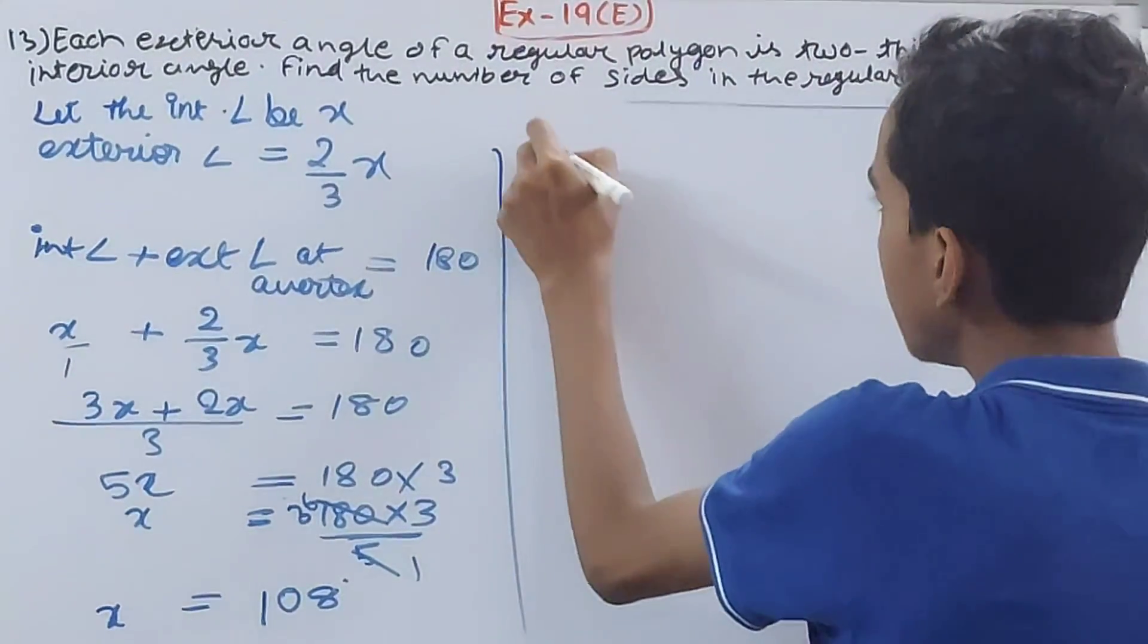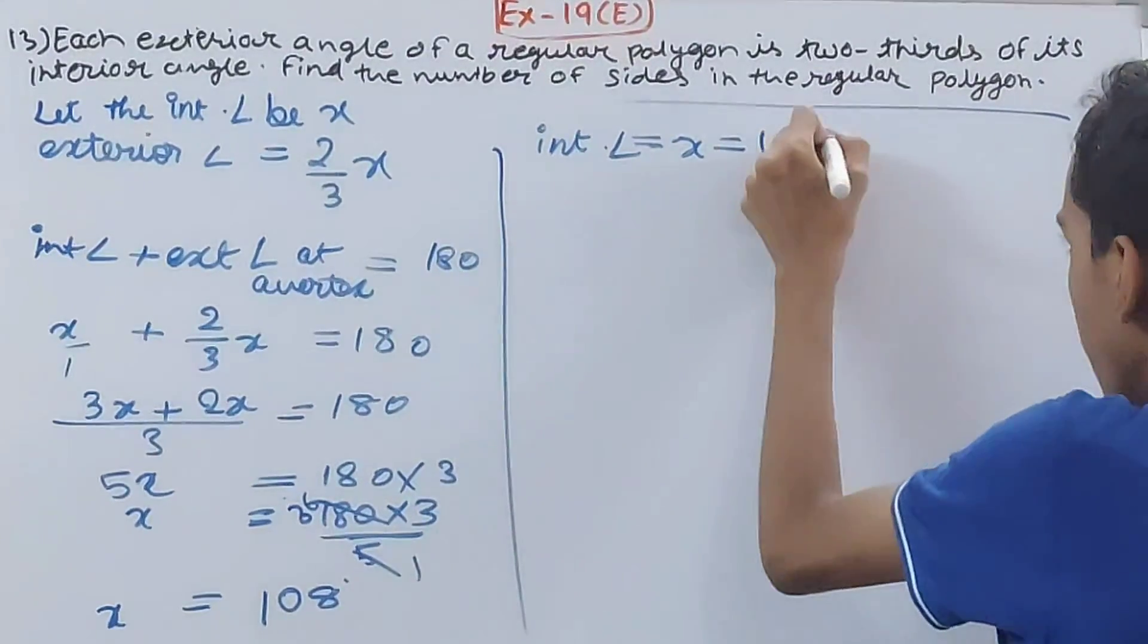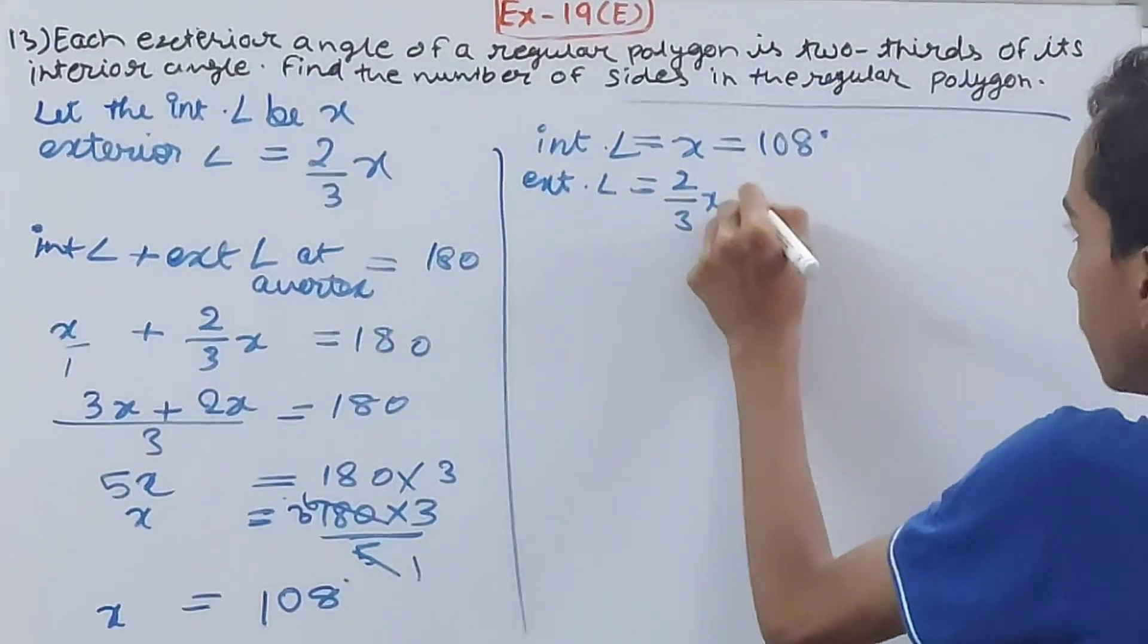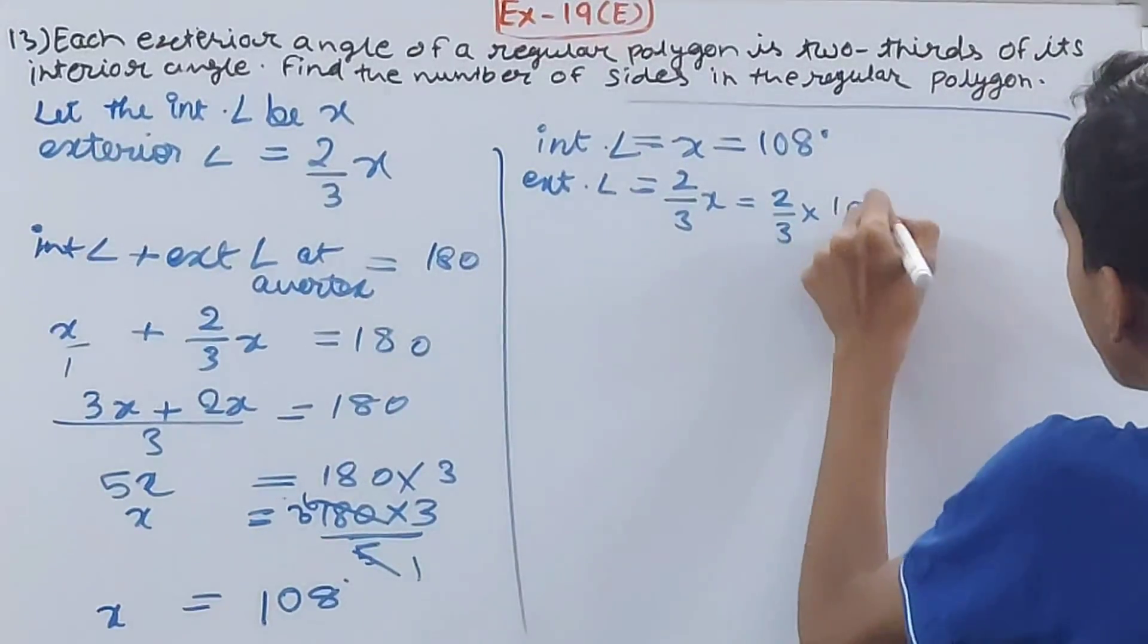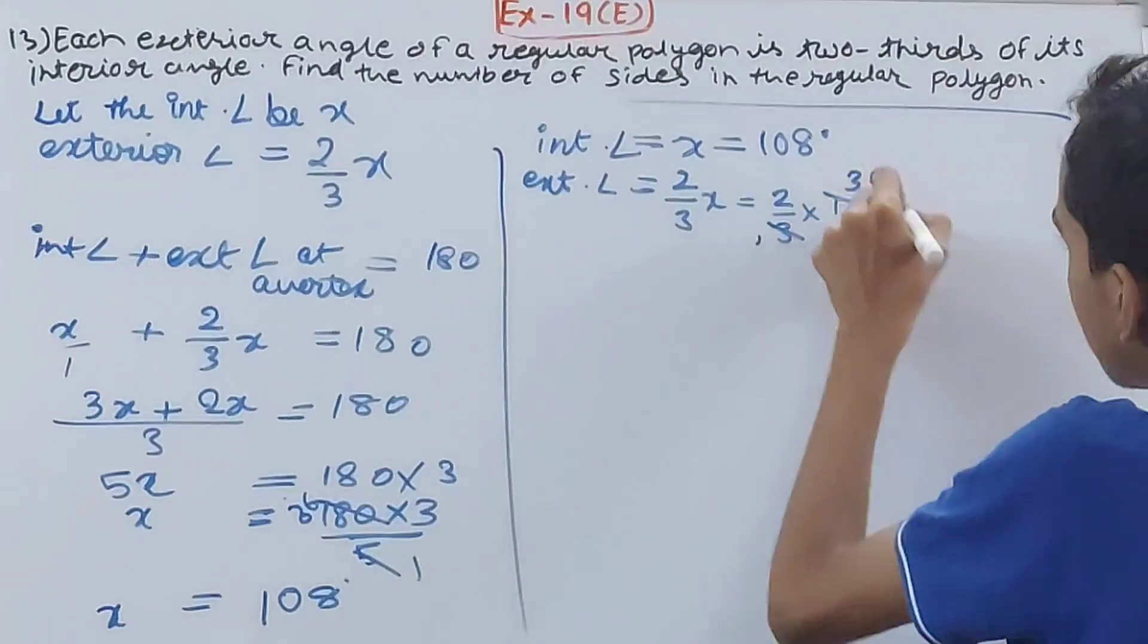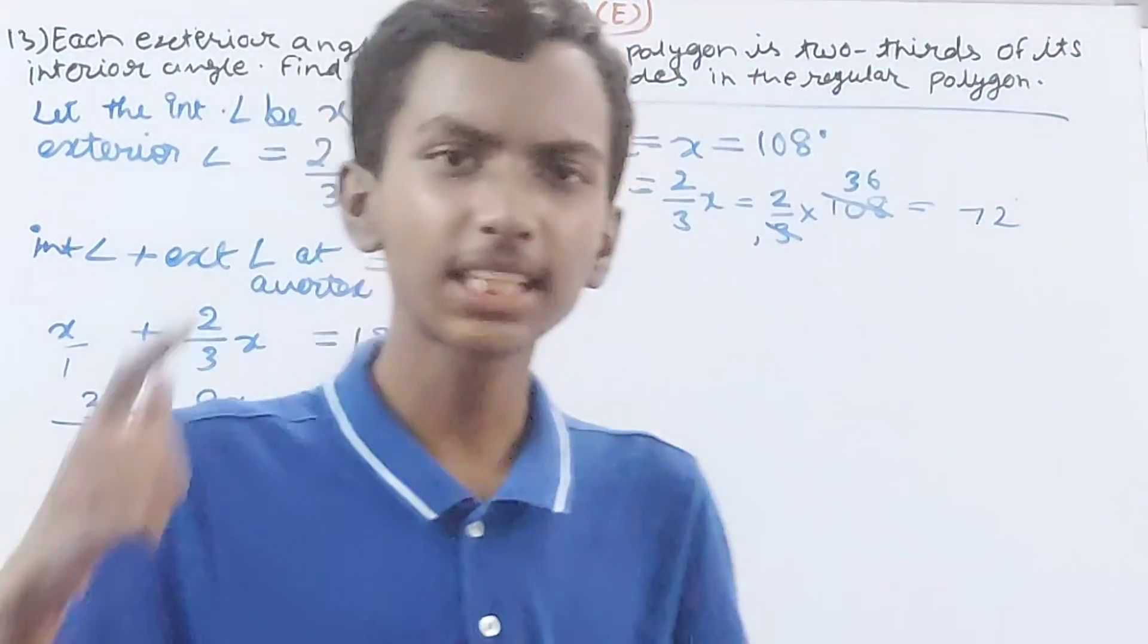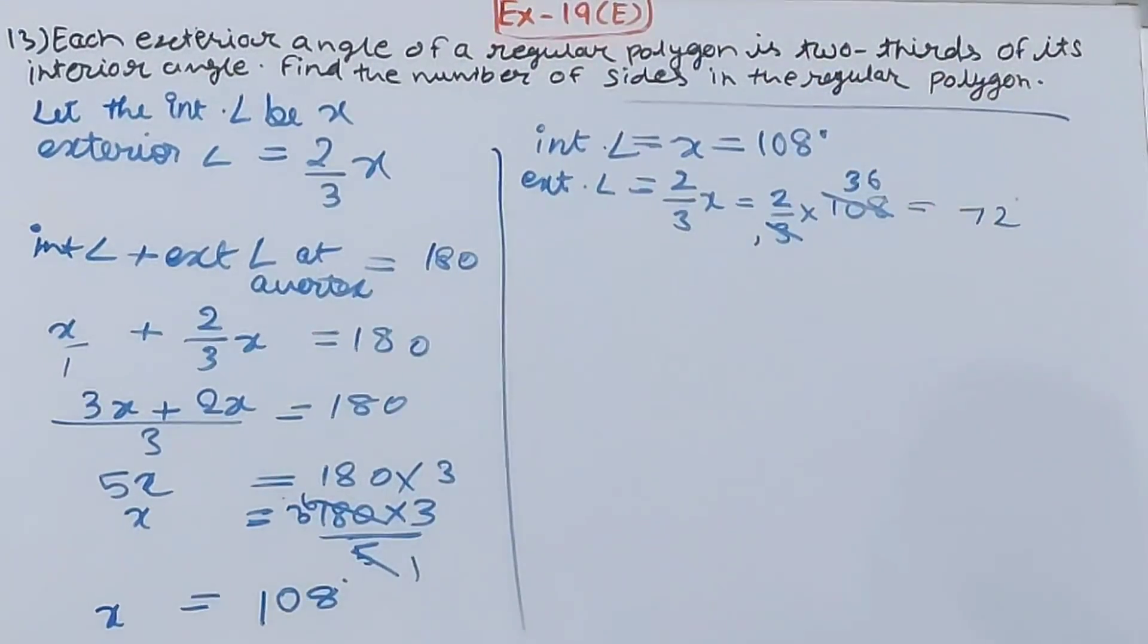So the interior angle is equal to x, which is 108 degrees. The exterior angle is equal to 2/3 x. What will be the value of this? 2/3 × 108. Cancel this, it will go 36 times, 36 × 2 is 72 degrees. So interior angle is 108 degrees and exterior angle is 72 degrees.